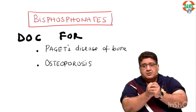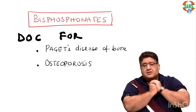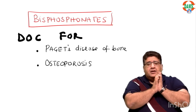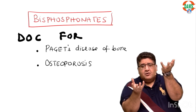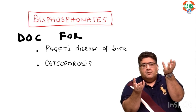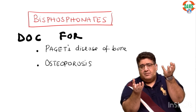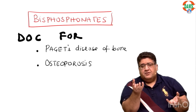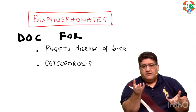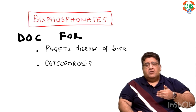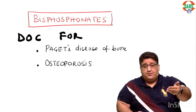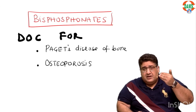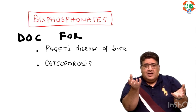We need to first understand a bit about osteoporosis. If you are in your 20s or 30s, you have more osteoblastic bone formation compared to osteoclastic bone resorption — that's why your bones are growing. But with passage of age, through the 40s, 50s, 60s, 70s, and 80s, osteoclastic resorption increases while osteoblastic bone formation stays the same. Osteoporosis means excess resorption along with normal bone formation.